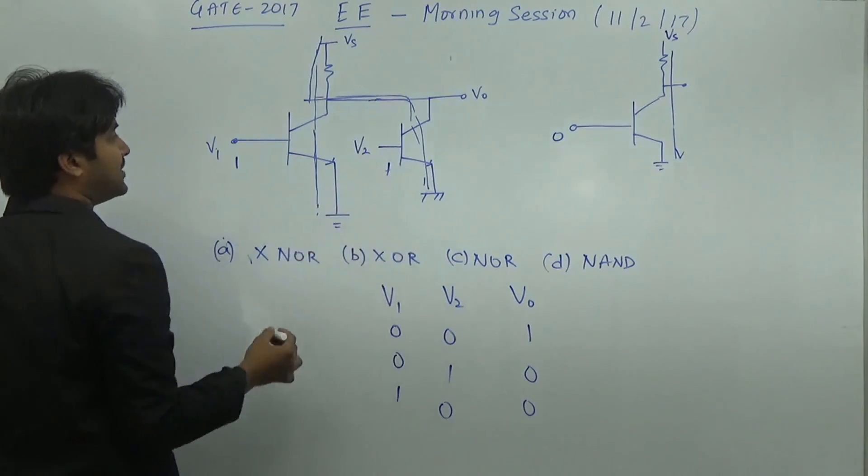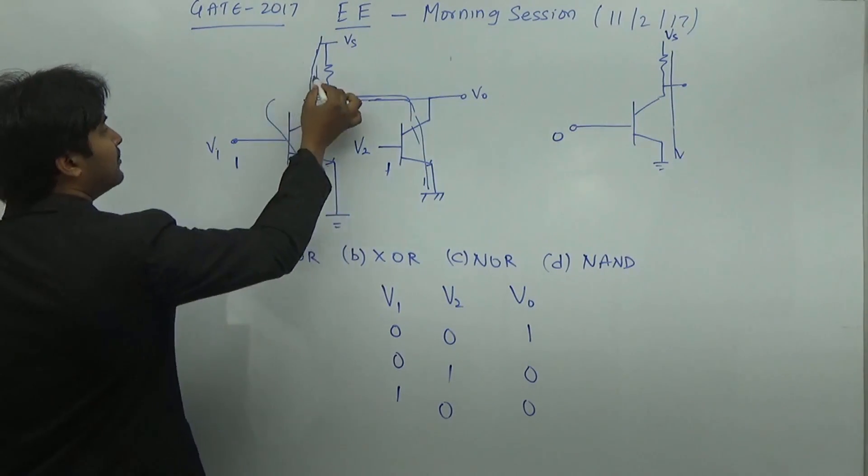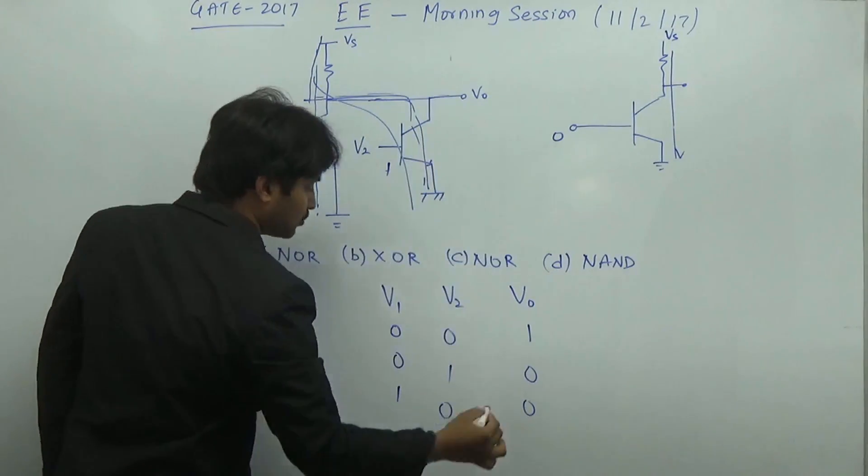When both are 1, it means both are going to be short circuit. When both are short circuit, the voltage available here will be equal to once again 0.